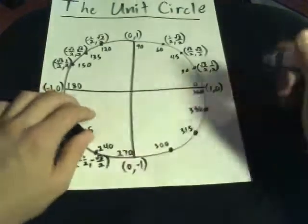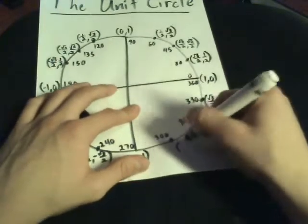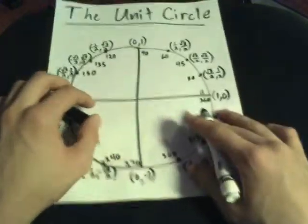And then, in terms of the quadrants, it's like normal. It goes positive, positive, then negative, positive, then negative, negative, and positive, negative.